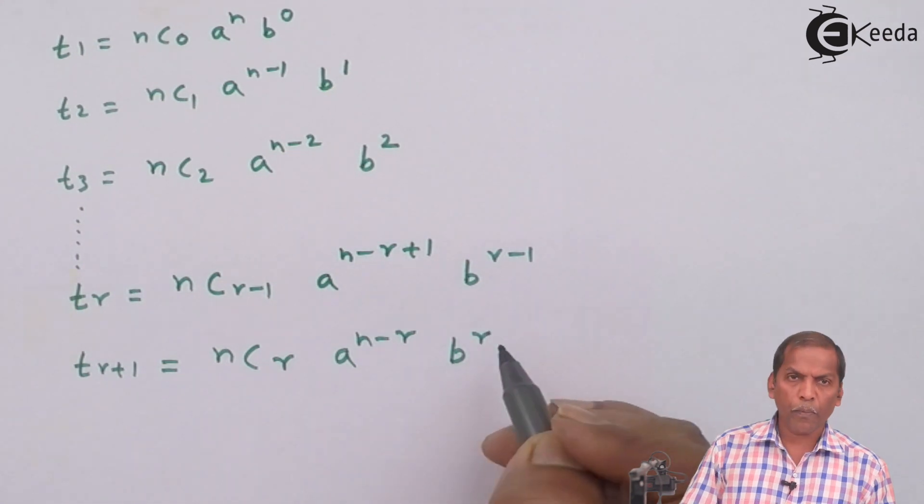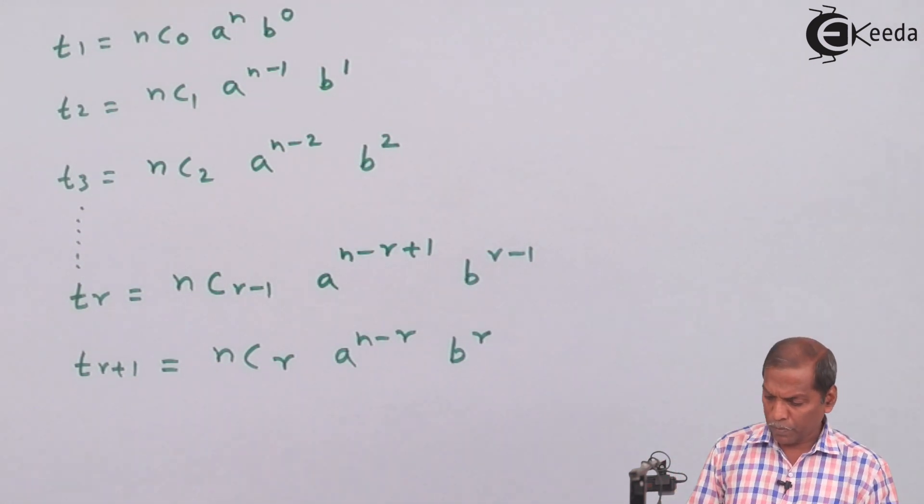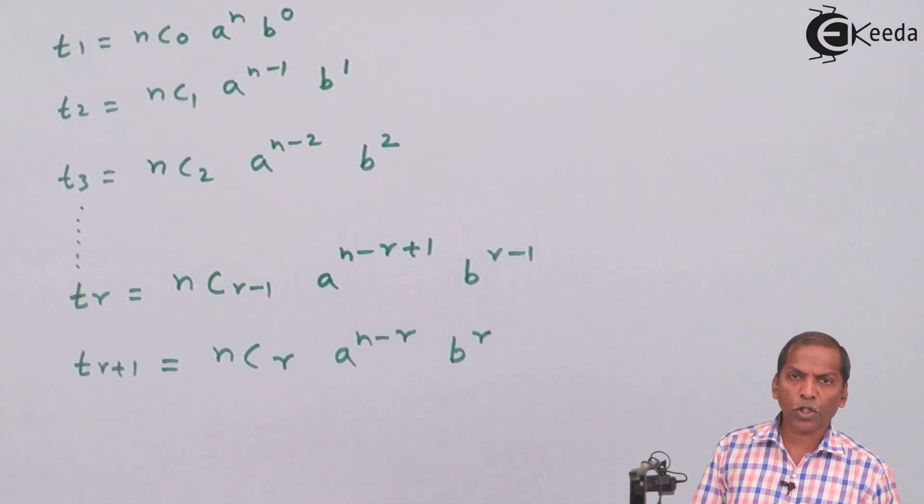So here, Tr+1 is called the general term.